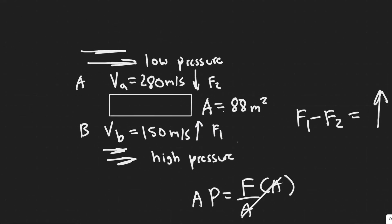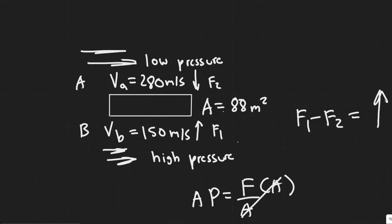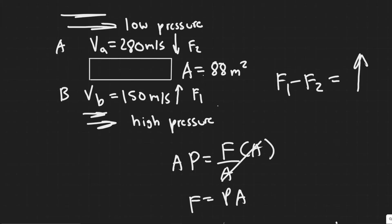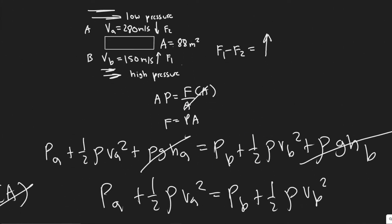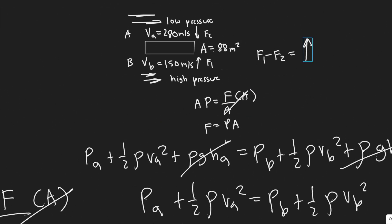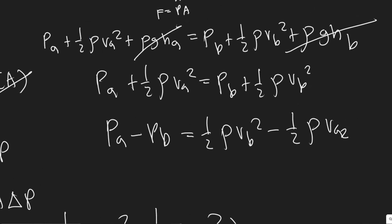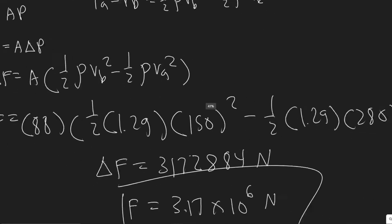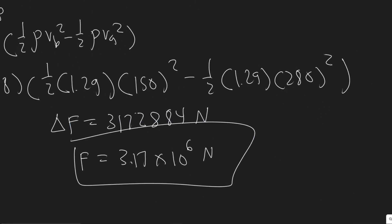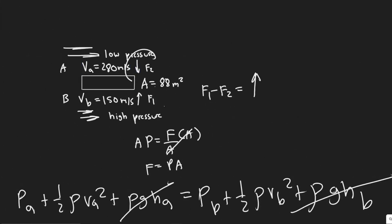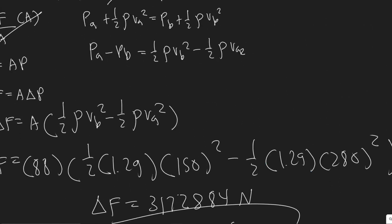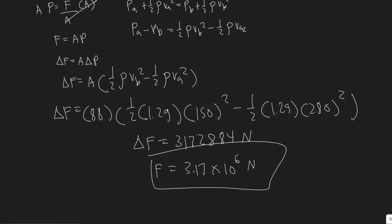Quick rundown: we have the velocity of air on both surfaces; higher velocity means lower pressure, so the top is the lower pressure region and the bottom is high pressure. From F = PA, greater pressure means greater force, so F1 is greater than F2 and the net force points upward. We found the change in pressure using Bernoulli's equation, multiplied by area to get the lift force. The result was negative due to the subtraction order, so we took the magnitude — giving 3.17 × 10⁶ Newtons.